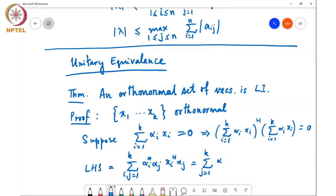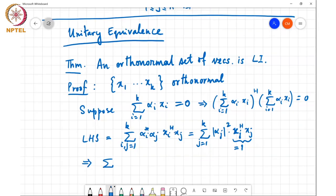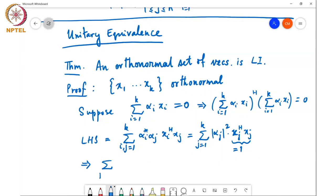say j from 1 to K, alpha_j, there is a star missing here, alpha_j mod squared times Xi, XJ Hermitian XJ which is equal to 1. I'll actually write it out so that it's clear, XJ Hermitian XJ and this equals 1.